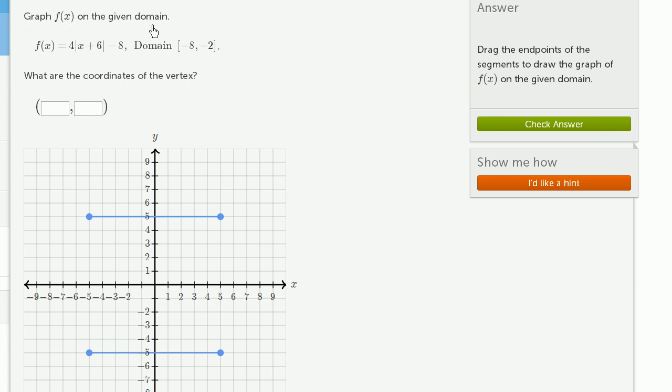Graph f(x) on the given domain. So f(x) is equal to 4 times the absolute value of x plus 6 minus 8. And the domain is x between negative 8, including negative 8—this bracket means that we're going to include this endpoint—and negative 2. And we're going to include negative 2. The bracket means we're going to include it. If we didn't want to include the endpoints, we would use parentheses.